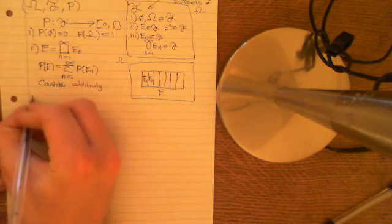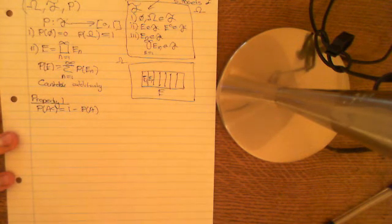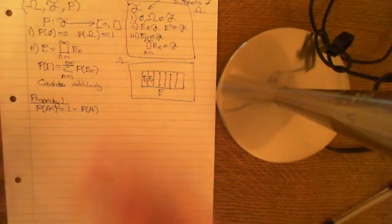So, what we're now going to derive from these axioms are certain other properties. Property 1 is that the probability of A complement is equal to 1 minus the probability of A. The probability of an event not happening is 1 minus the probability that it will happen. That's a pretty intuitive result, but let's prove it in terms of this mathematical setup. We now have a mathematical axiomatic structure and we don't need to know anything about probability in the real world to derive this result. We can derive results from it just using logic.